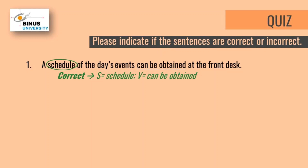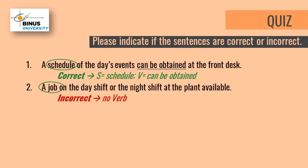Let's look at the answers. Number one: A schedule of the day's events can be obtained at the front desk. We can see that there is a subject, which is the word schedule, and the verb is can be obtained. Since the sentence has a subject and verb, this sentence is correct. Number two: A job on the day shift or the night shift at the plant available? We should be careful with this kind of question because it is tricky. The only subject is the word job, where the other words function as phrases. There is no verb in the sentence, so this sentence is incorrect.